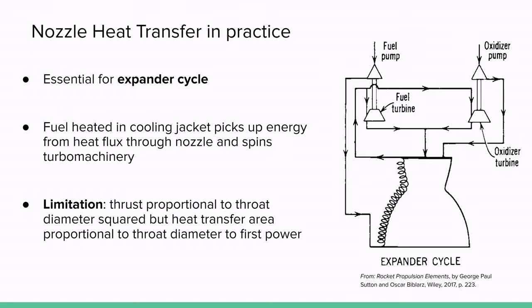undergoes a phase change when it passes through the cooling jacket around a hot nozzle. Because of the phase change, it can expand against the turbine, which drives the pumps, which drives the entire engine. There is a limitation, however, known as the d-squared law. Because thrust is proportional to characteristic throat diameter squared,